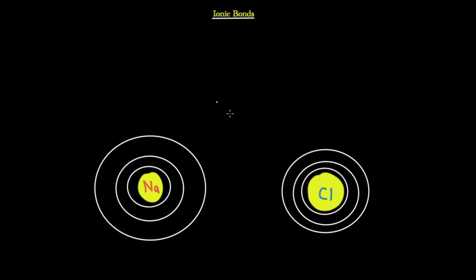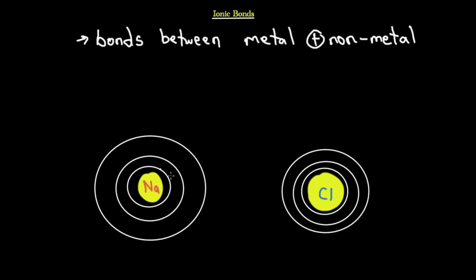The first thing to discuss are ionic bonds. Ionic bonds are bonds that occur between a metal and a non-metal. For example, we're going to take sodium and chlorine — sodium is on the metal side of the periodic table and chlorine is on the non-metal side.